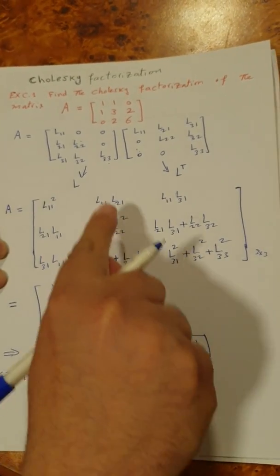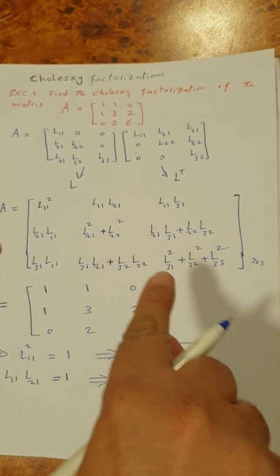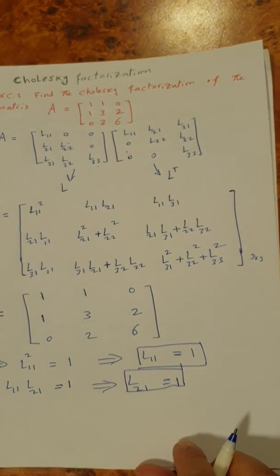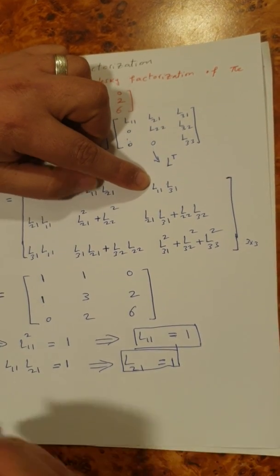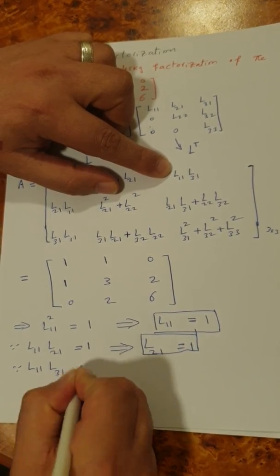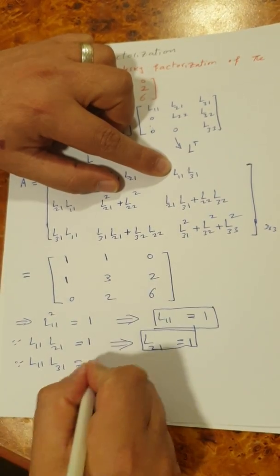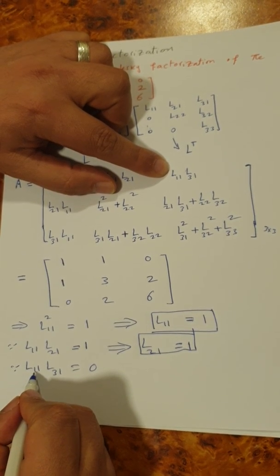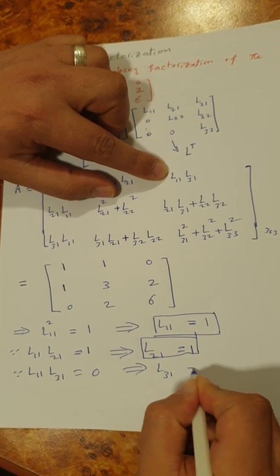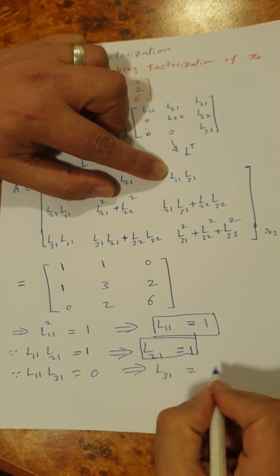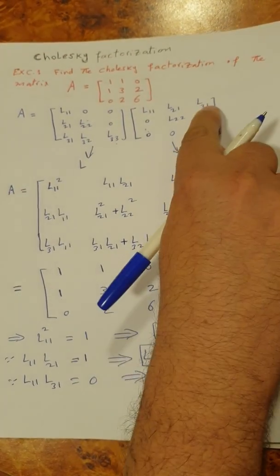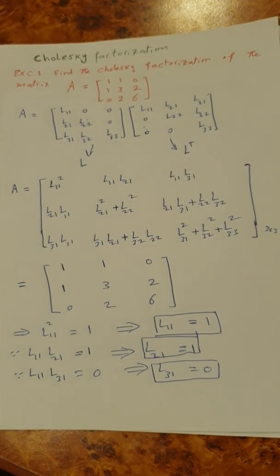By the same approach, since L11 times L31 equals 0, and L11 is not zero, we conclude that L31 equals 0. So the element L31 in our lower triangular matrix equals zero.